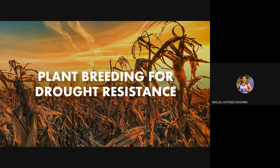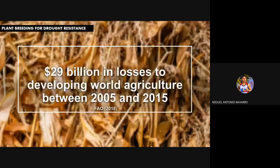Plant breeding for drought resistance. Drought, also referred to as low moisture stress, is a form of abiotic stress. It is a challenge posed by the environment to the survival and productivity of a plant or crop that occupies a large area. This directly translates to economic loss to the farmers who depend on the harvest.